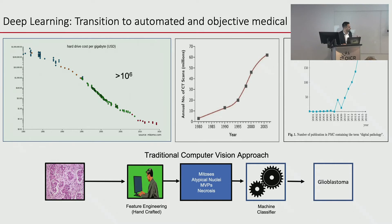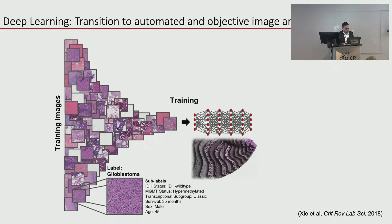The problem with traditional approaches is: if a picture is worth a thousand words, you'd have to engineer a thousand features for every picture, and some things we see are very hard to quantify. That's why deep learning is so important — you don't have to do this manual feature engineering. The new way is to feed large amounts of annotated image tiles through a neural network, which in a data-driven fashion develops features automatically. Because of this, it can generate millions of features stored in the neural network.